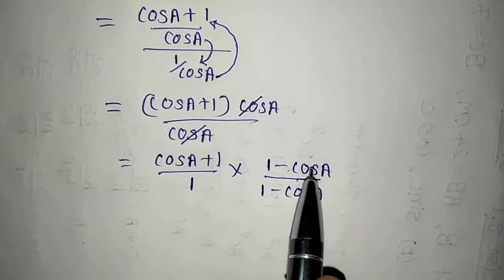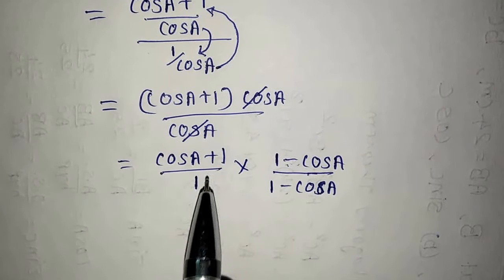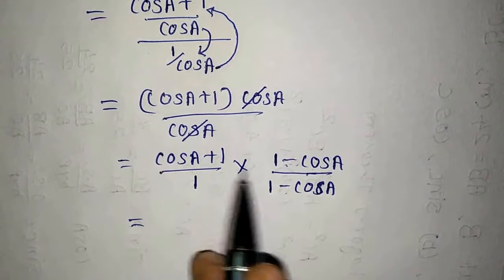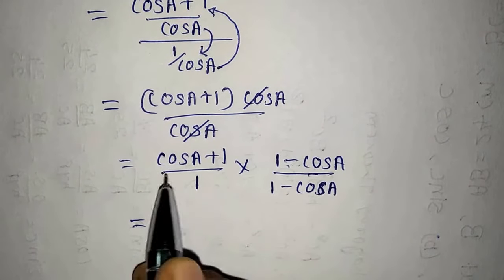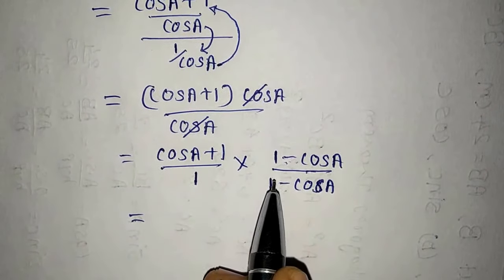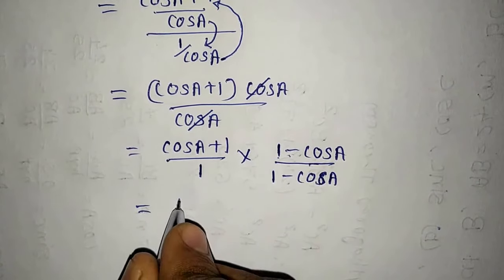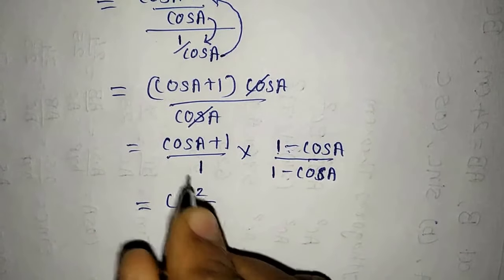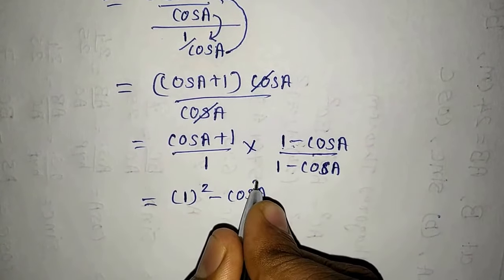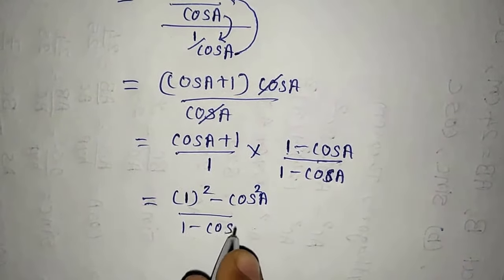Now here you can see these two will multiply by each other — that is 1 plus cos A and 1 minus cos A. We know that 1 plus cos A and 1 minus cos A is just like a plus b and a minus b. So I should write it as a square minus b square: first term squared, that is 1 square, minus the second term squared, cos A whole square, upon 1 minus cos A.